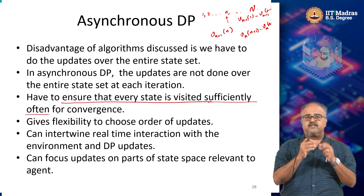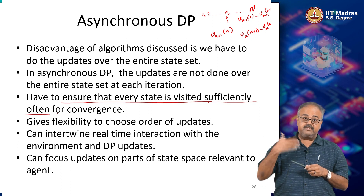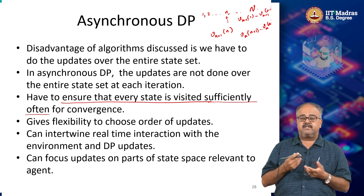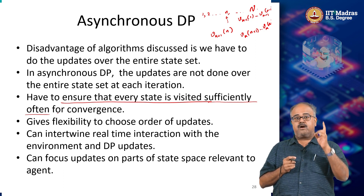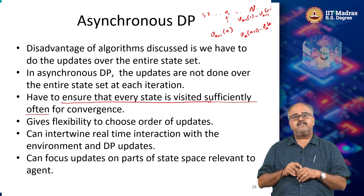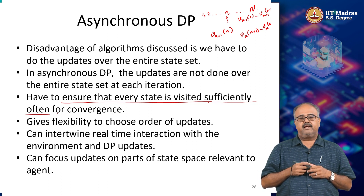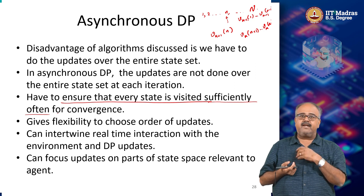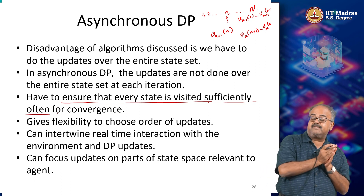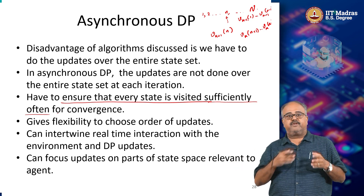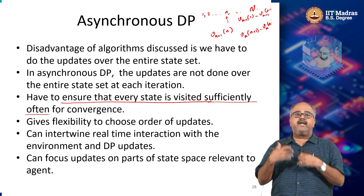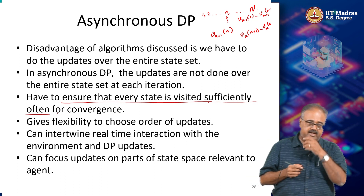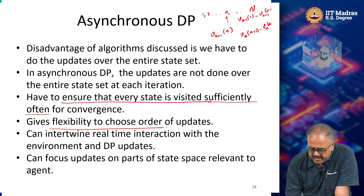If I keep doing this, as long as I ensure that every state is visited sufficiently often - it is not that I should update a state only once and then forget about it - as long as I keep visiting the states again and again and updating them many times over all the iterations, this works. With synchronous DP every state gets updated exactly once in every iteration. With asynchronous DP, some states could have been updated k times but some states would have been updated less than k times. As k tends to infinity, every state should get updated many many times.